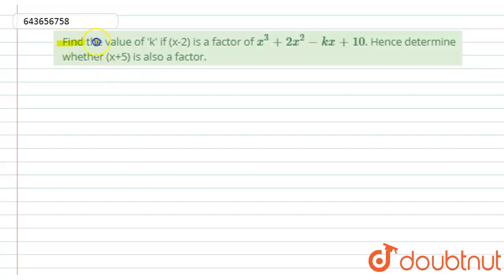Here we have been given: find the value of k if (x minus 2) is a factor of x cubed plus 2x squared minus kx plus 10. Hence determine whether (x plus 5) is also a factor.